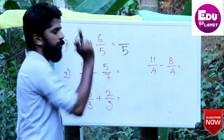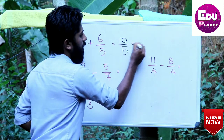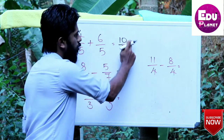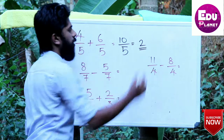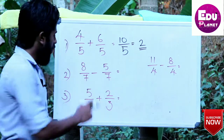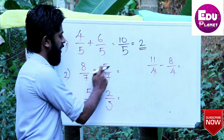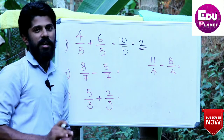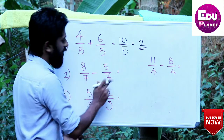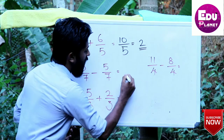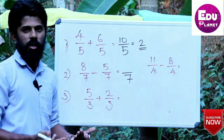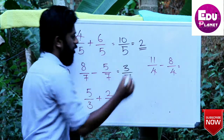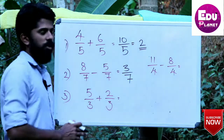Since the denominator is the same, we directly add the numerators: 4 plus 6 equals 10, giving us 10 by 5, which simplifies to 2. Next, 8 by 7 minus 5 by 7 — the operation is subtraction. The denominator is 7, which is the same, so 8 minus 5 equals 3, giving 3 by 7.